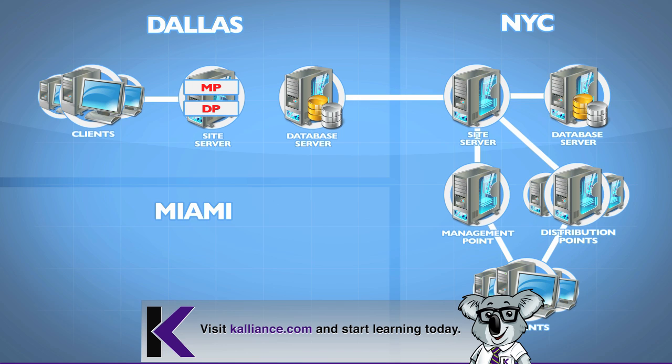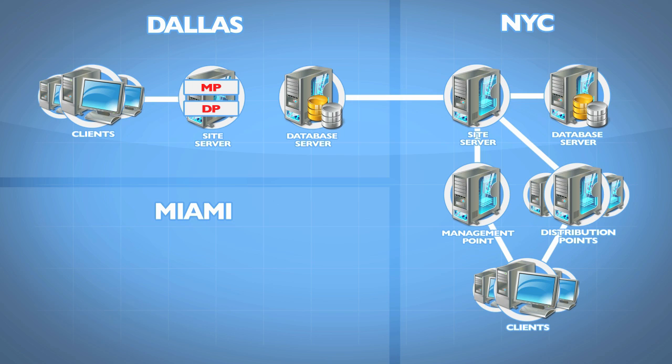From the central primary site system, we still have to replicate information over to the distribution point role running on that site system, and we control and throttle that bandwidth. Even for management point activities — like client machines checking in to get policy information, advertisements, and to upload inventory and desired configuration management reports — they can do that to their local management point in the secondary site location. From there, things get uploaded into the primary site database for centralized reporting.